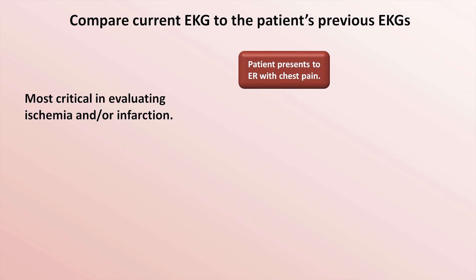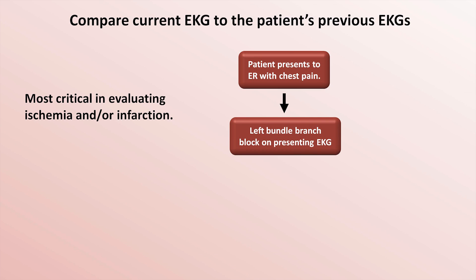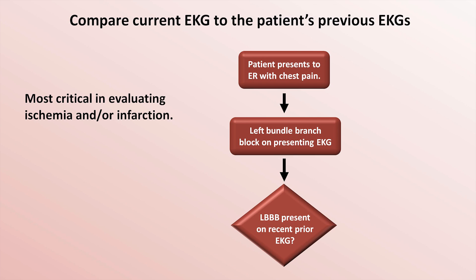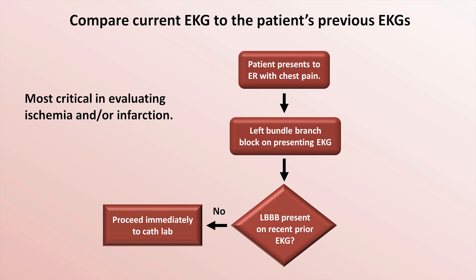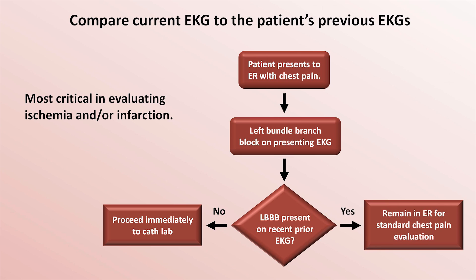If that EKG shows a left bundle branch block, the next question is whether that left bundle branch block was present on a recent prior EKG. If the answer is no, the left bundle is assumed to be the consequence of acute ischemia and/or infarction, and these patients proceed immediately to the cath lab, considered a subtype of ST elevation MI unless cath proves otherwise. If the left bundle branch block was present on a prior EKG, the patient remains in the ER for the standard chest pain evaluation — serial EKGs, cardiac enzymes, and possibly evaluation of alternative diagnoses such as pulmonary embolism.